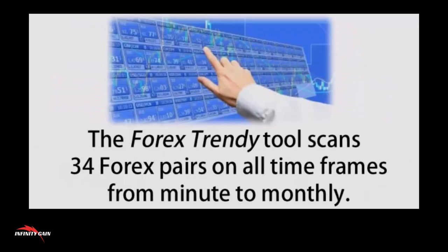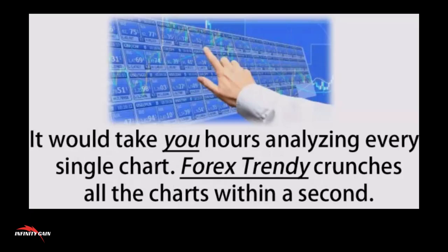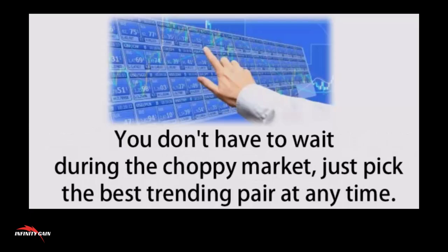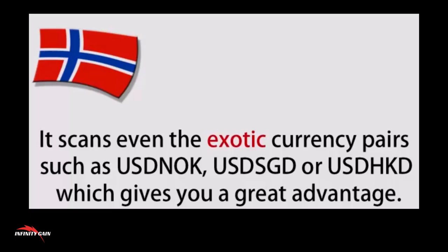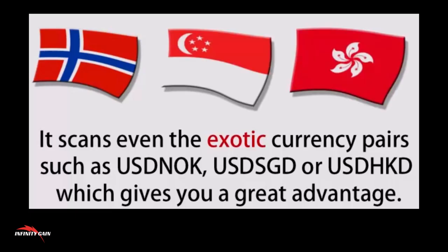The Forex Trendy tool scans 34 forex pairs on all time frames from minute to monthly. It would take you hours analysing every single chart, but Forex Trendy crunches all the charts within a second. You don't have to wait during the choppy market — just pick the best trending pair at any time. It scans even the exotic currency pairs, such as the Norwegian Krone, the Singapore Dollar, or the Hong Kong Dollar, which gives you a great advantage.